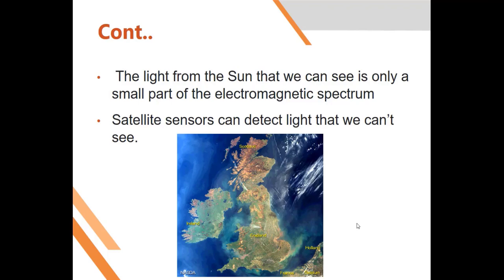The sun produces a broad range of the electromagnetic spectrum, but we are only able to detect blue, green, red, and a few other colors. As an advantage, remote sensing using satellites can detect light that we cannot see. For example, this image was acquired by a satellite — this is Scotland, this is England, and other countries; this is water, and it was acquired from the sky.